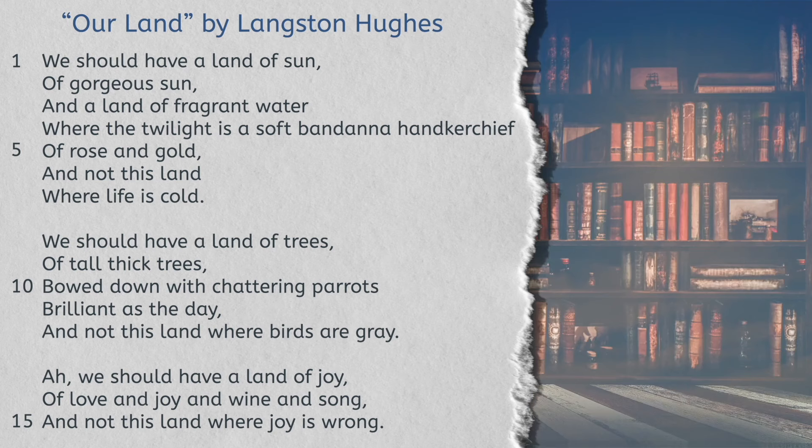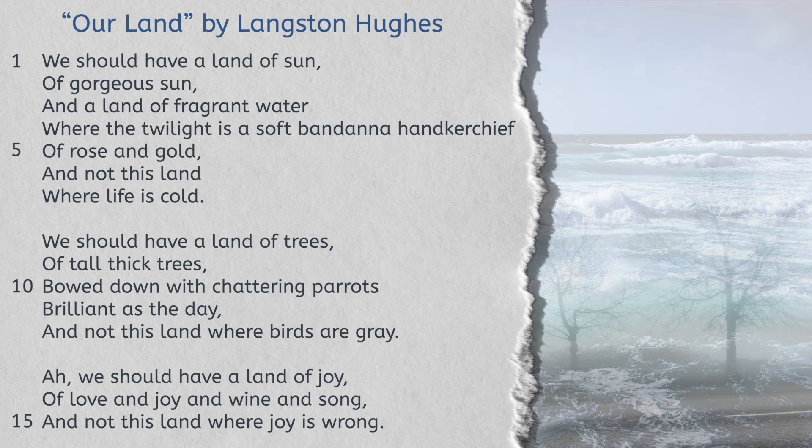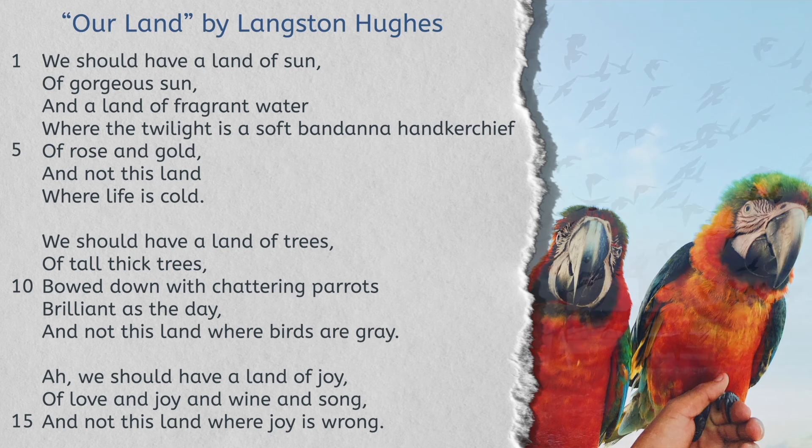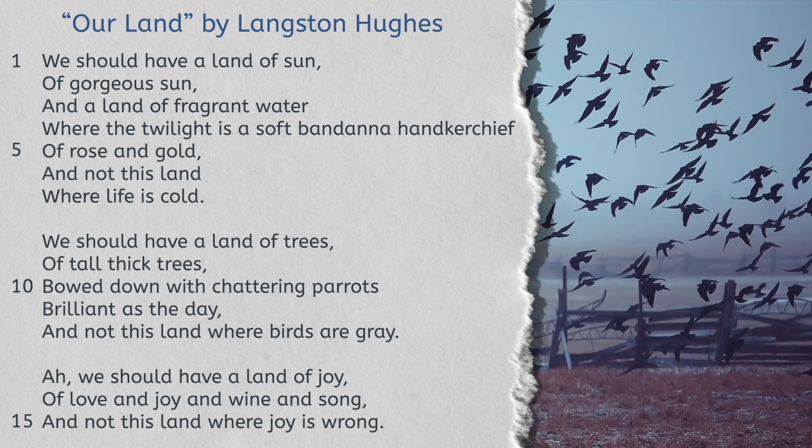Let's take a look at the poem 'Our Land' by Langston Hughes. We should have a land of sun, of gorgeous sun, and a land of fragrant water, where the twilight is a soft bandana handkerchief of rose and gold, and not this land where life is cold. We should have a land of trees, of tall, thick trees, bowed down with chattering parrots, brilliant as the day, and not this land where birds are gray. We should have a land of joy, of love and joy and wine and song, and not this land where joy is wrong.